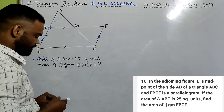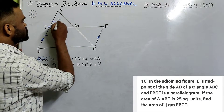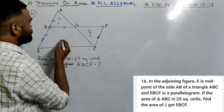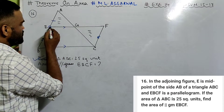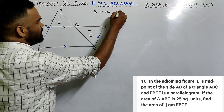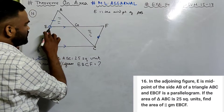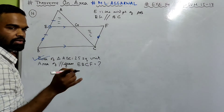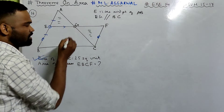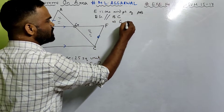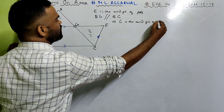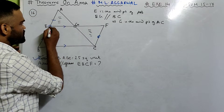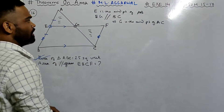Look over here — very easy. First, you see this triangle and this triangle. If you can prove these two are congruent, our work is done. By the midpoint theorem, E is the midpoint of AB and EG is parallel to BC. So by the converse midpoint theorem, G is also the midpoint of AC, which implies AG equals GC.